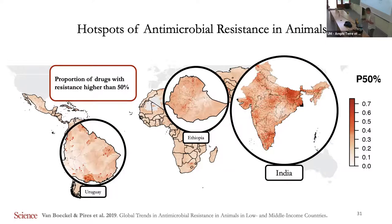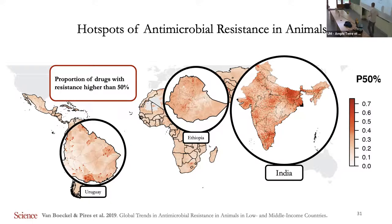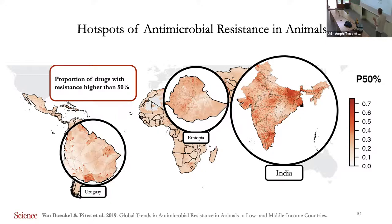The result is a map of the proportion of drugs that failed across low and middle-income countries. The main regions with hot spots of resistance were: the south of Brazil in the Americas; Ethiopia and the suburbs of Johannesburg in Africa; and in Asia, resistance levels were generally very high, but particularly elevated in south India, northeast China, and northeast India.